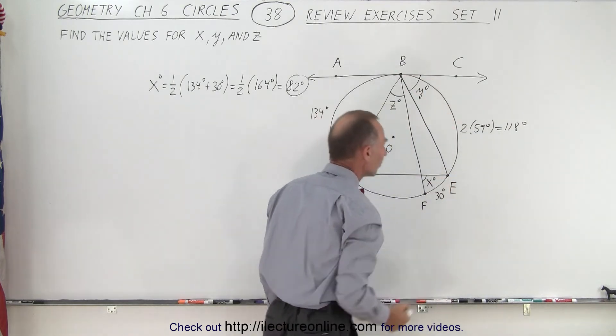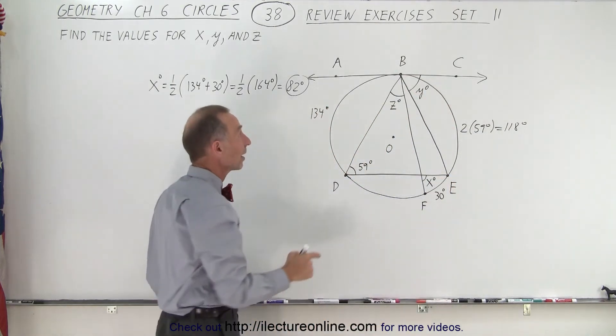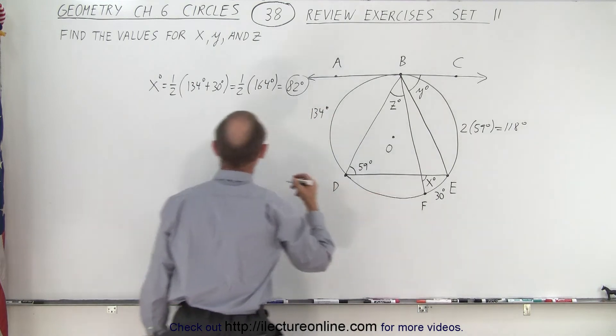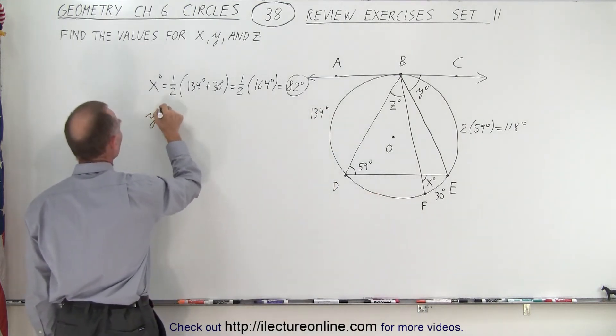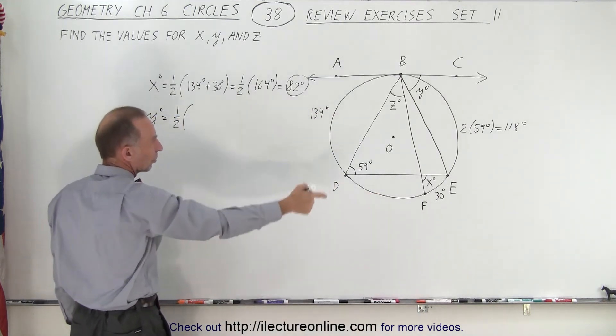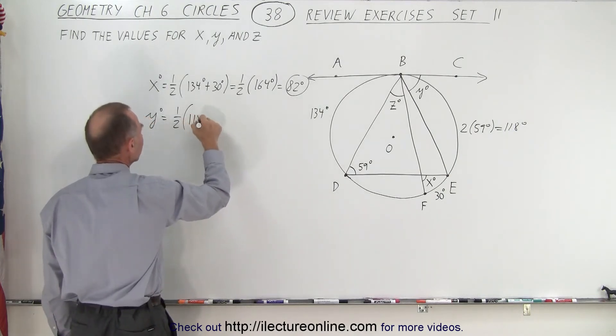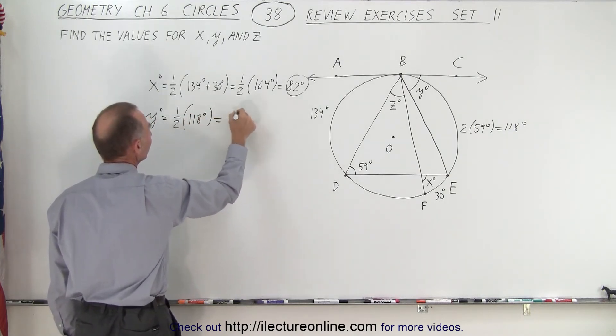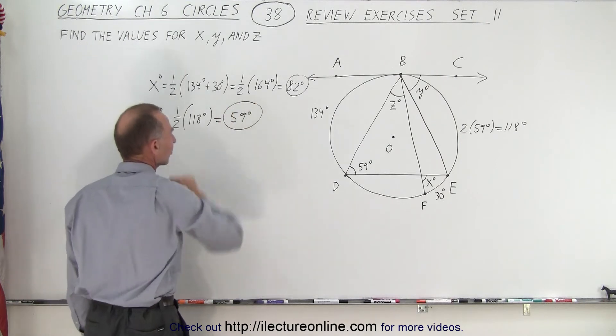So now we know the measure of the arc from B to E. Now we can find the value for y, because we know that y degrees is equal to one-half the measure of that arc, which is 118 degrees, which is 59 degrees. And so that's the answer for y.